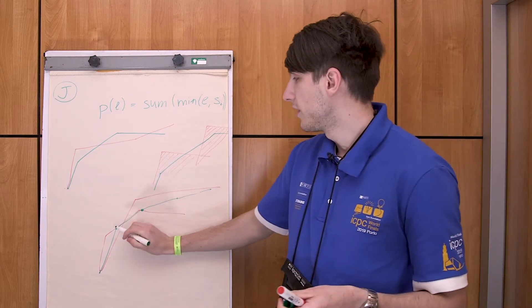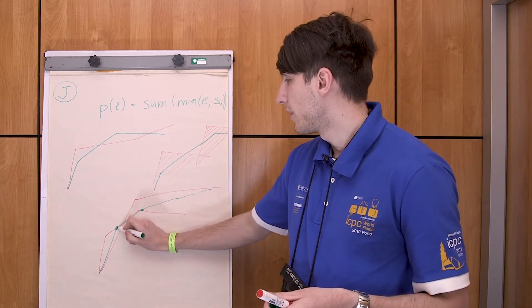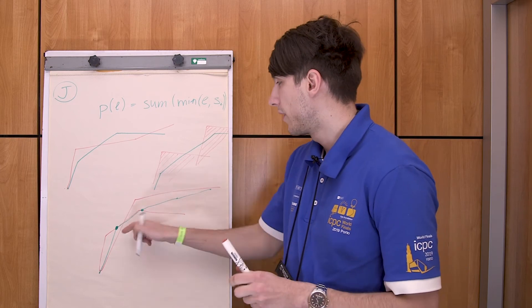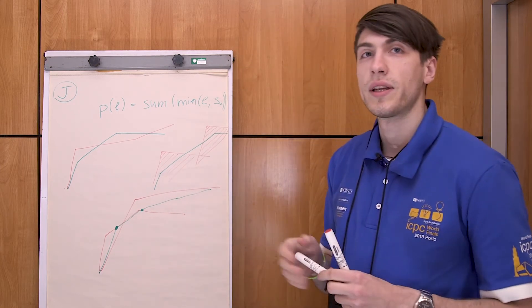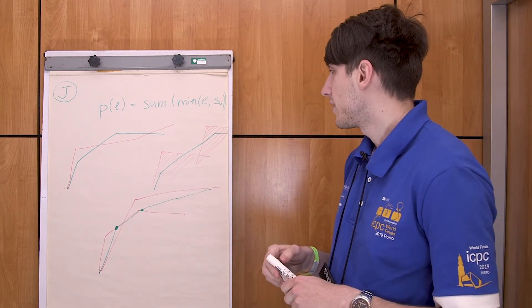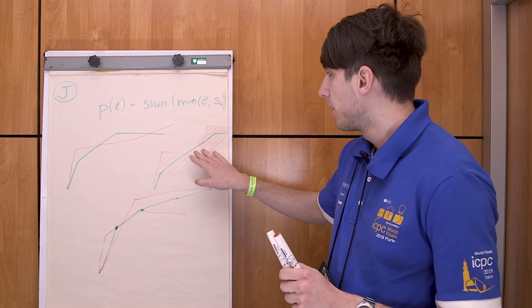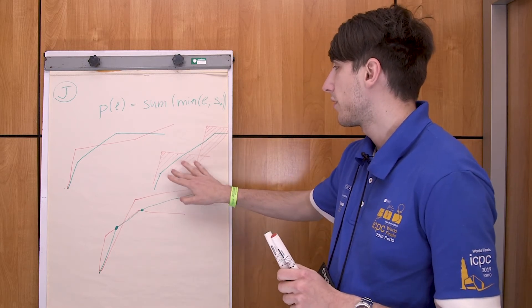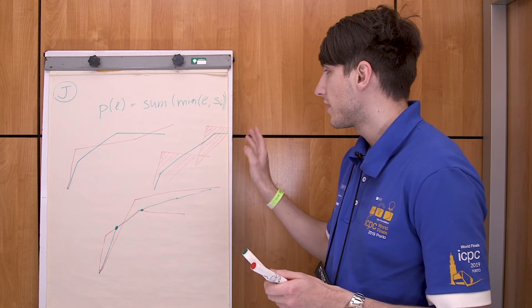And for example, for this function, its top parameter would be somewhere here. The trickiest case about this problem is that the top parameter for some particular function is not always at the point where some function has a vertex.